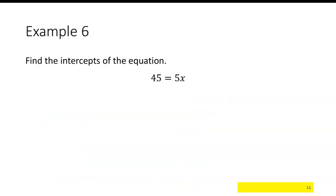For the equation 45 equals 5x, to find the y-intercept, set x equal to 0, which gives us 45 equals 5 times 0.